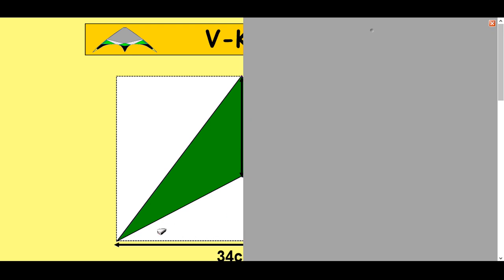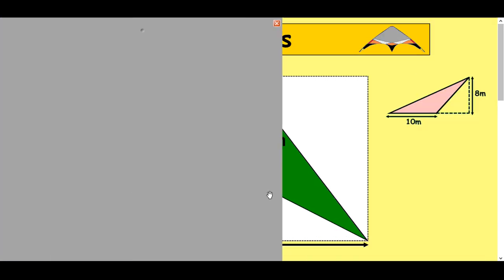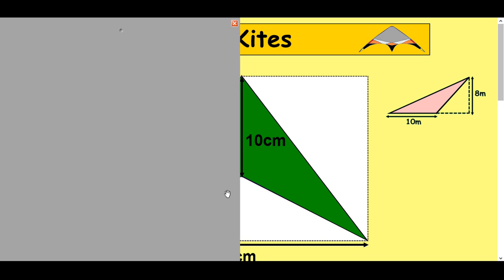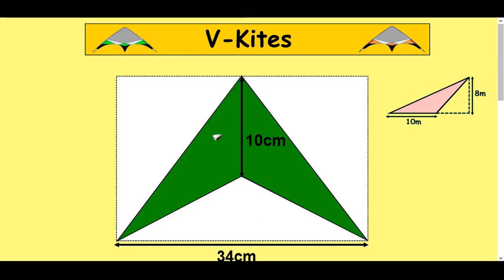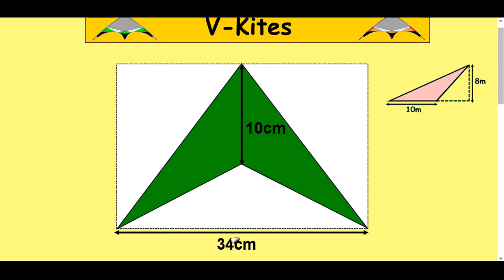And then you would do the other side which would be exactly the same, this side here which would be 10 times 17 halved. So that side's a half of 170 and this side's half of 170 and then you would add them together. I suppose if you have 170 and add a half 170 you get 170 don't you. Easier to do it, just do 34 times 10 and half your answer because a half of 340 is 170.